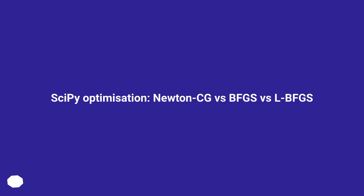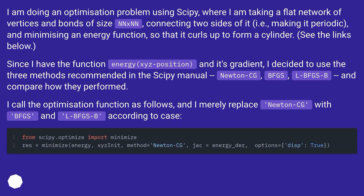I am doing an optimization problem using SciPy, where I am taking a flat network of vertices and bonds of size nn×nn, connecting two sides of it, i.e. making it periodic, and minimizing an energy function, so that it curls up to form a cylinder.